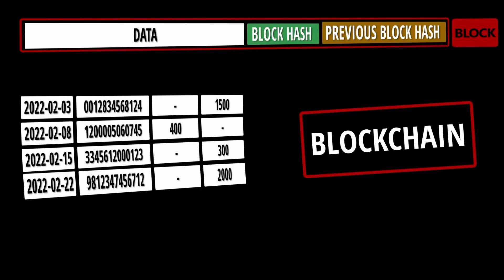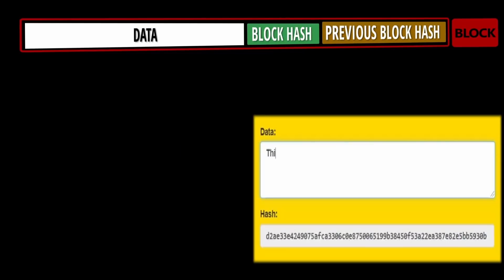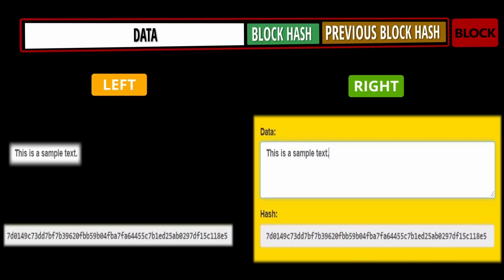Let's see how hash is generated and how a change in data results in a change in hash. Let's say the data here is 'this is sample text,' and for this data a hash is generated. The data on the left and right are equal — because the data is equal, the hash also matches.